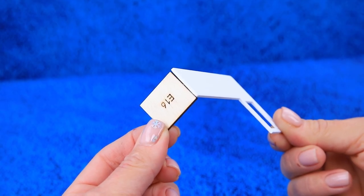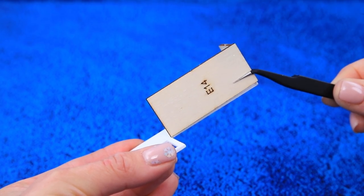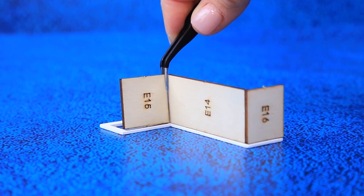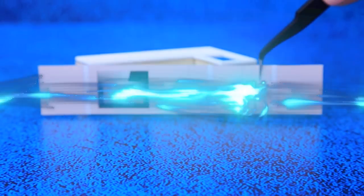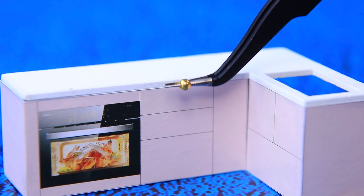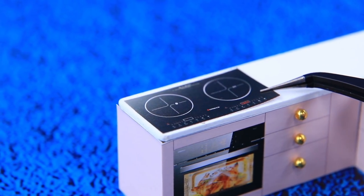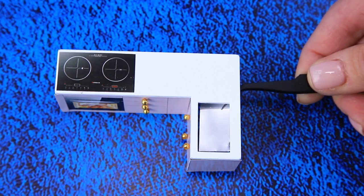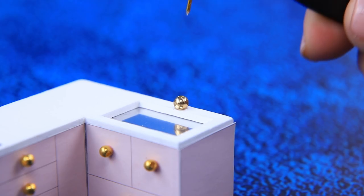Glue on veneer pieces around a counter. It will be a kitchen. Add handles and a stove panel. Attach a faucet and knobs to it.